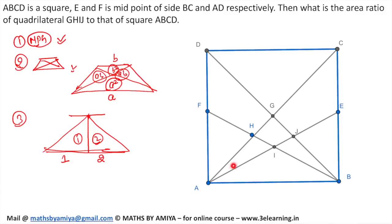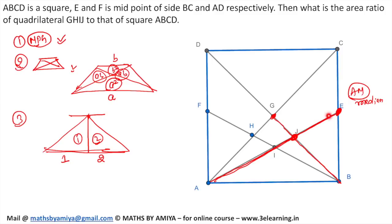Just see in triangle ABC. Can I say if E is the midpoint, then AE is a median? Yes, we can say AE is a median. A is median, midpoint, B is median — so J is the centroid. And the centroid divides any median in the ratio 2 is to 1, that is 2 towards the vertex and 1 towards the base. So by the same property, we can say this ratio is 1 is to 2.